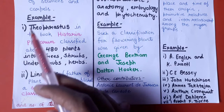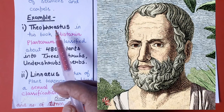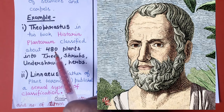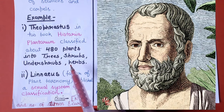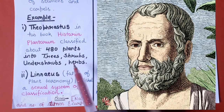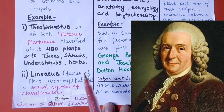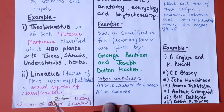Examples of the artificial system of classification: the first is by Theophrastus, who is regarded as the father of botany. In his book Historia Plantarum, he classified about 480 plants into trees, shrubs, under-shrubs, and herbs, considering only habit as the characteristic feature. Another example is by Linnaeus, regarded as the father of plant taxonomy. He published a sexual system of classification based on the nature and number of stamens and carpels — that classification will be taken up in detail in a later video.